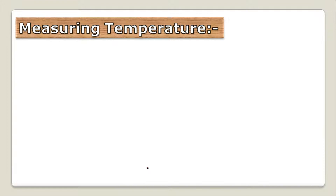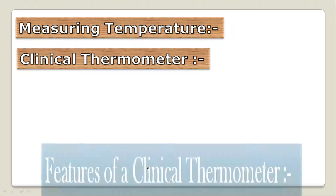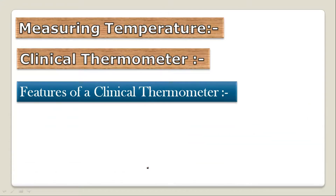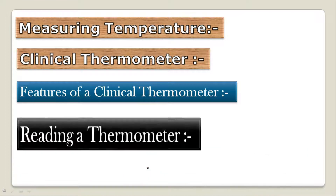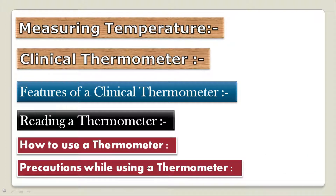In the previous lecture we had seen about measuring temperature: a substance used to measure temperature is known as a thermometer. We also covered clinical thermometers — a thermometer used to measure the temperature of the human body, or used by doctors to measure the temperature of their patients. We covered features of the clinical thermometer and how to read and use a thermometer.